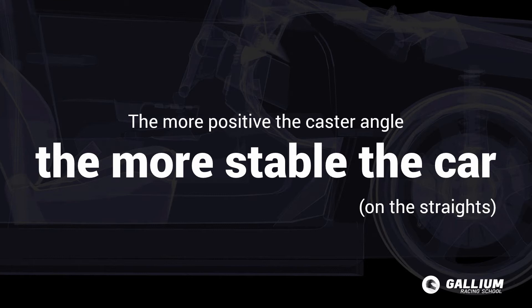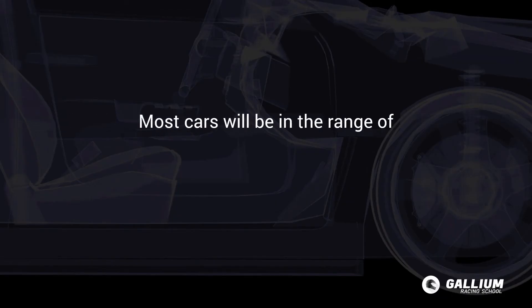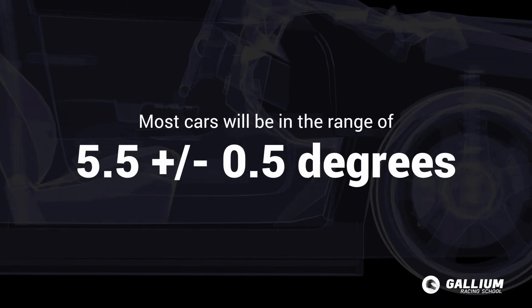Even so, set the caster angle as low as possible without the car wanting to weave all over the track. Most cars will be in the range of 5.5 plus or minus 0.5 degrees. If during long straights the car weaves all over the track and you find yourself constantly having to correct it, simply increase the angle.